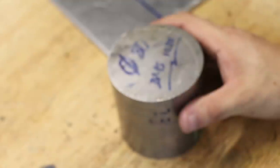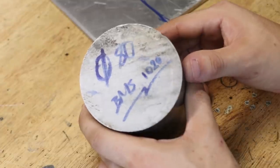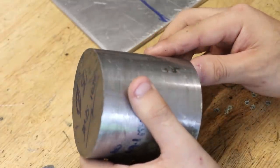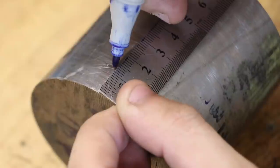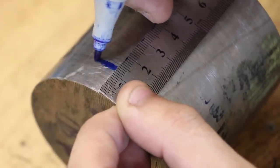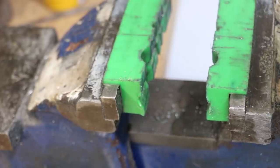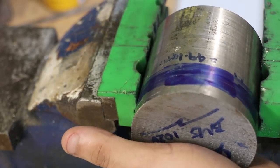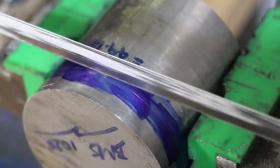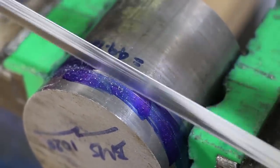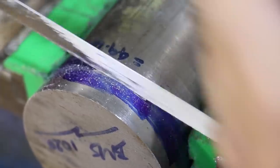Thankfully I had some 1020 grade steel on hand in the correct diameter for the job. All I have to do is cut off a small disc, and I have to admit, even for me this is a pretty tough cut.